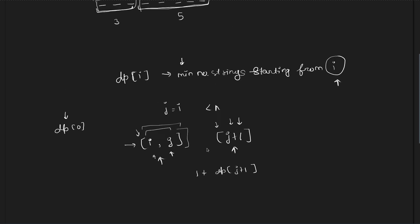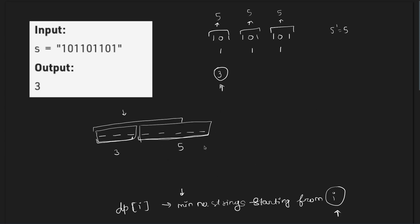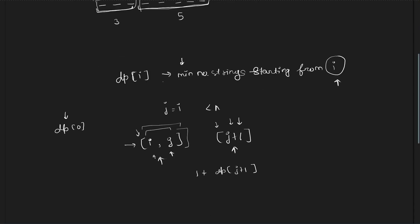This problem was not very difficult and the explanation took very little time. To summarize: greedy does not work because taking the maximum number of characters together may leave remaining characters that cannot form a valid answer. So we maintain a DP array of size n where dp[i] denotes the minimum number of strings starting from index i, and dp[0] stores the final answer.